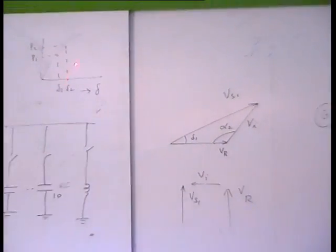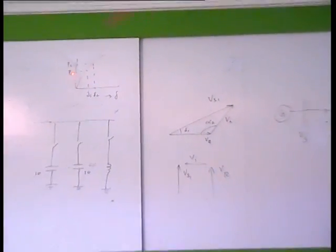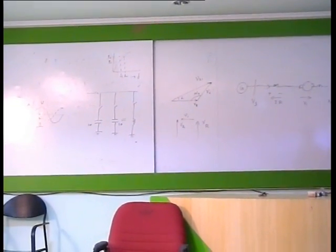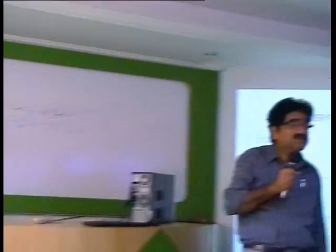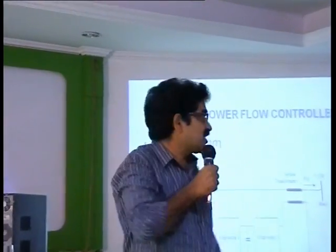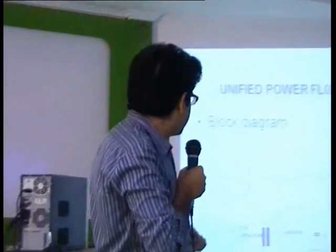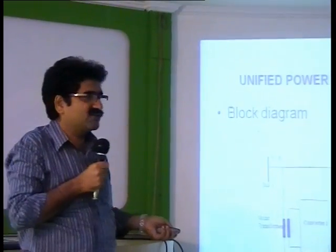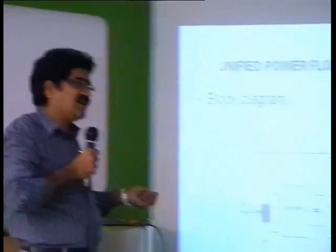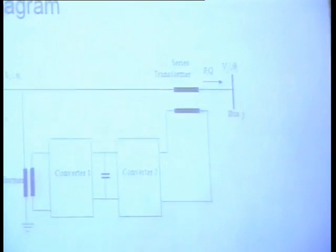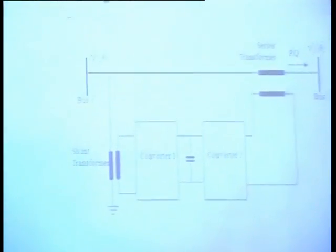Real power is proportional to sin(delta). If I reduce alpha2, say from 140 to 130 degrees, delta1 will increase to delta2, and power will increase from P1 to P2. This is how real power is controlled using the UPFC by playing with the inverter angle.